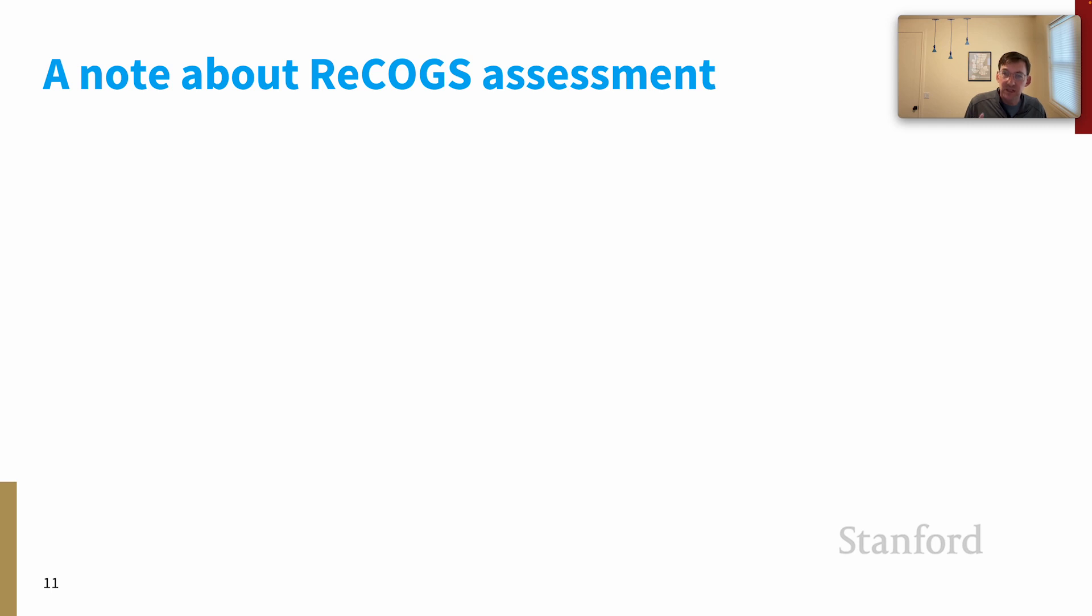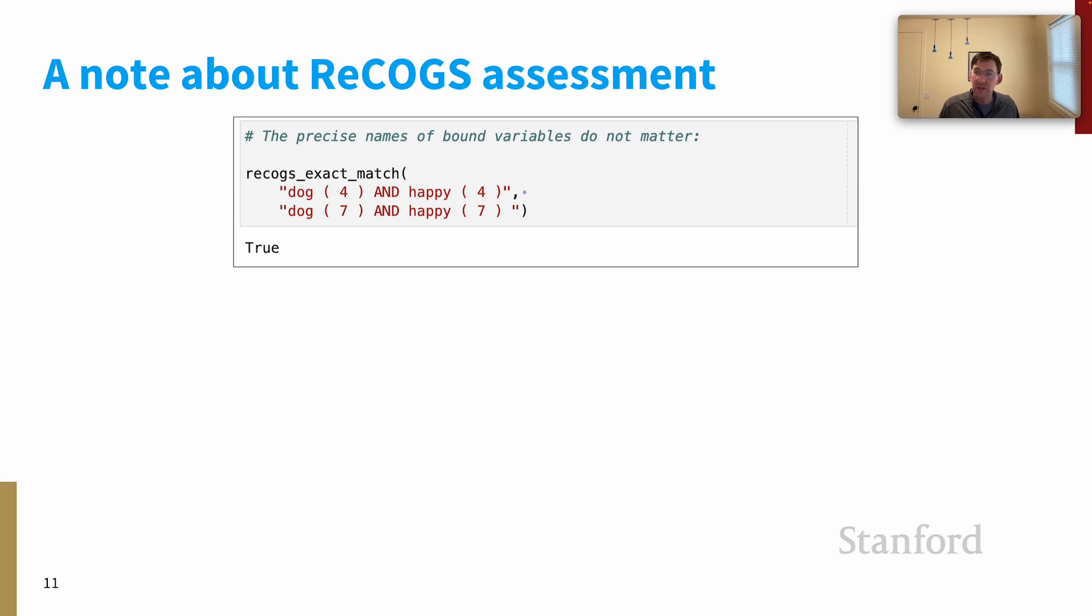Before proceeding, I wanted to say one thing about ReCOGS assessment. And again, we'll talk more in detail about this in the main screencast for the unit. But just quickly, the goal of ReCOGS is really to test for semantic interpretation and get past some of the incidental details of logical form. So our evaluation code is somewhat complicated. Here are three instructive examples.